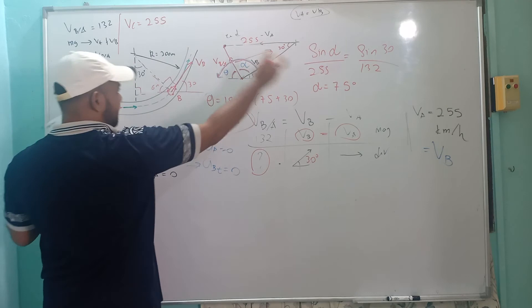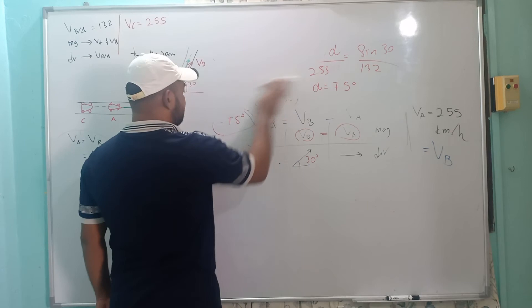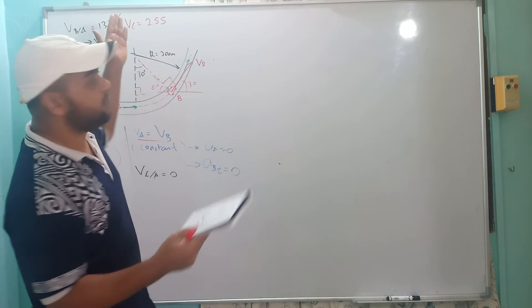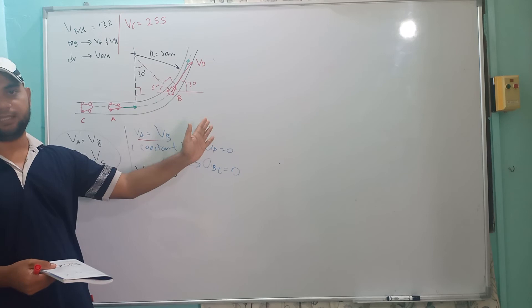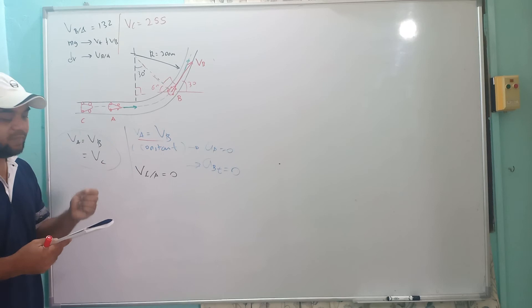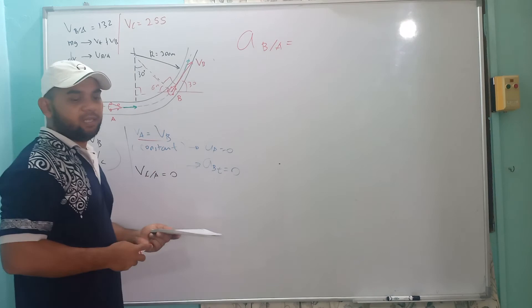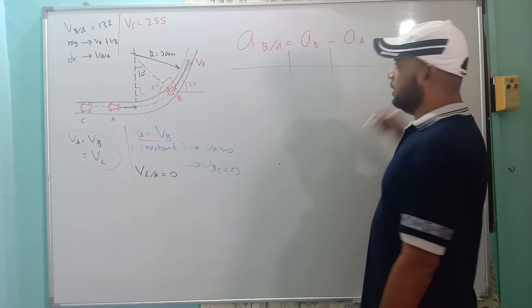Since VC = 255, and VA = VC, we have VA = VB = VC = 255 km/h. For the acceleration, we use A_BA = AB − AA. AA is zero because A moves at constant speed in rectilinear motion. AB has two components: AB tangent and AB normal. Since B also moves at constant speed, AB tangent equals zero, but AB normal still exists.